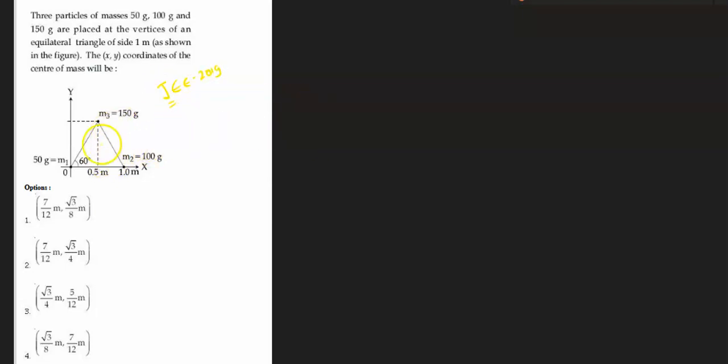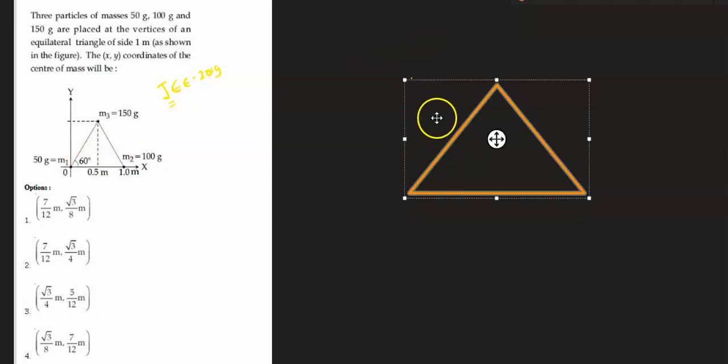What's given is three particles named M1, M2, M3 situated at vertices of the triangle. If we draw the picture, the first particle M1 is at O. The coordinate at this point is (0,0), and the particle M1 is here.